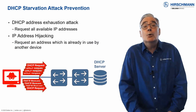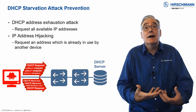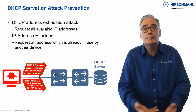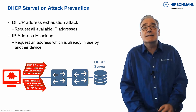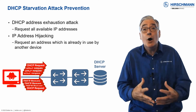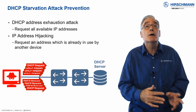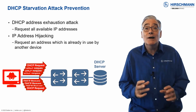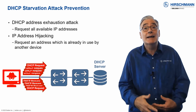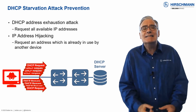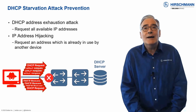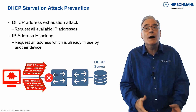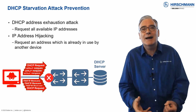DHCP servers have a pool of IP addresses, and end devices are issued addresses from this pool. A simple denial of service attack involves the attacker requesting all the available IP addresses from the DHCP server. As a result, no addresses are available for genuine end users. This is known as a starvation attack. Mitigating these attacks is not easy, but switches have the tools you require to block this malicious behavior.